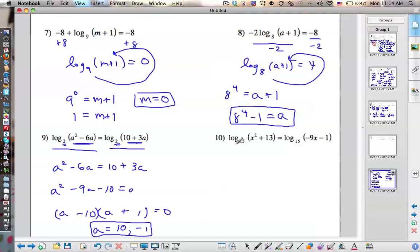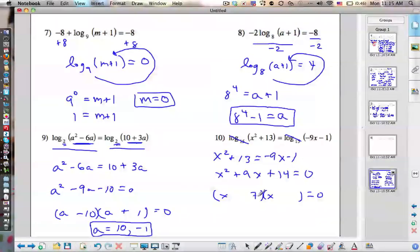Okay, same thing here. Just cancel the logs. So we get x squared plus 13 equals negative 9x minus 1. Move everything over. We get x squared plus 9x plus 14. Is that right, Ms. Paul? My handwriting's getting worse. So now what multiplies to 14, adds to 9. Looks like 7 and 2.